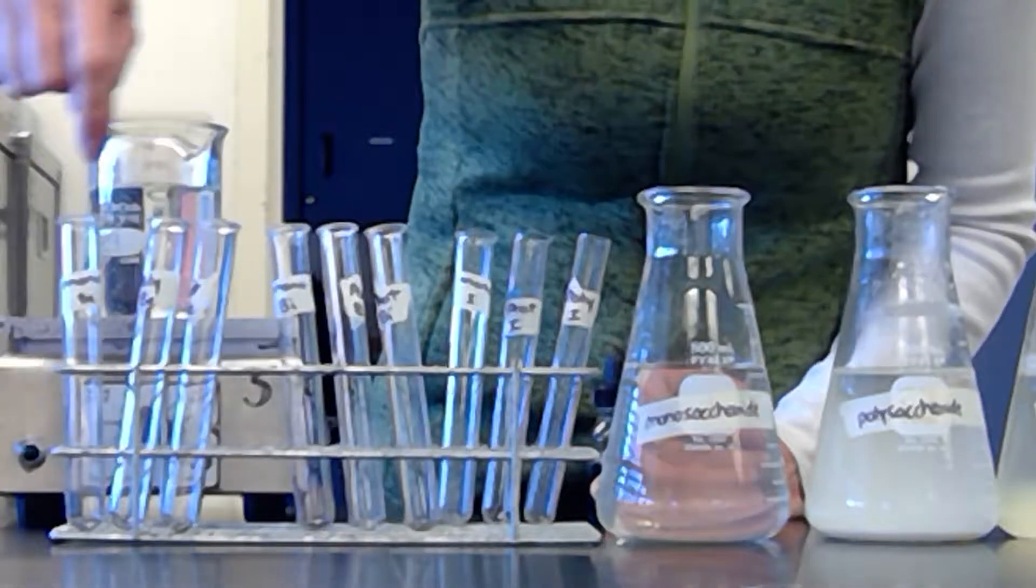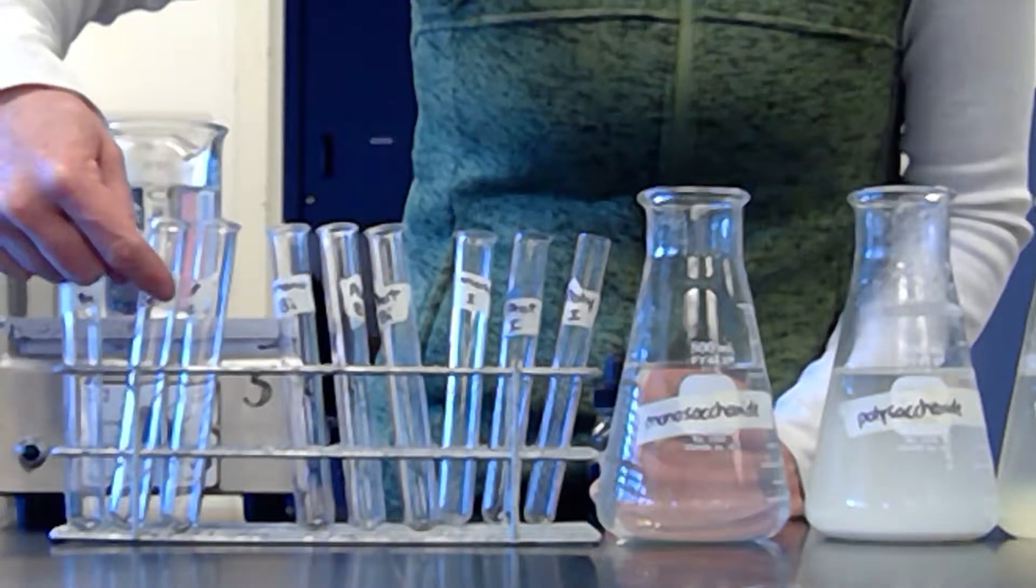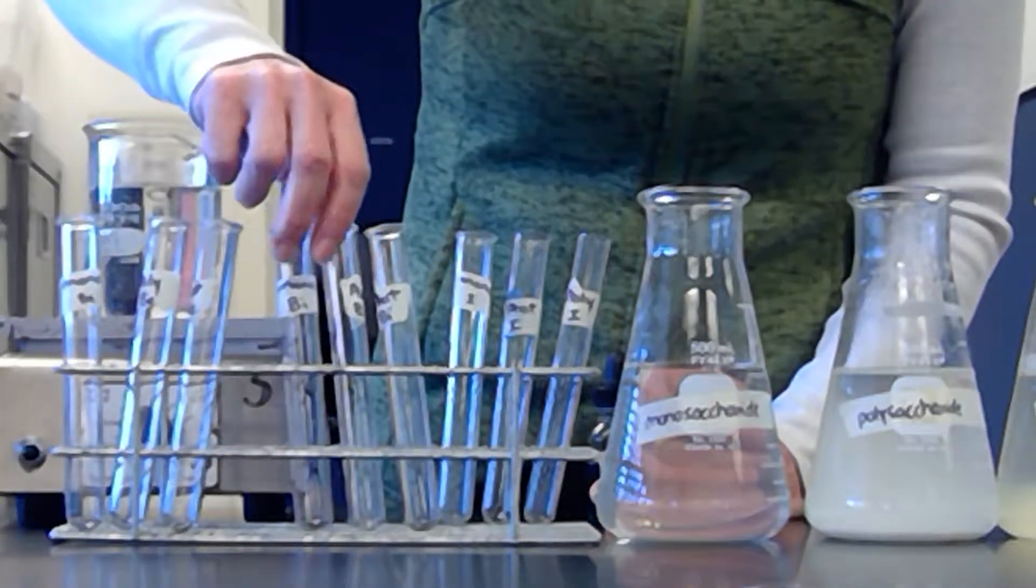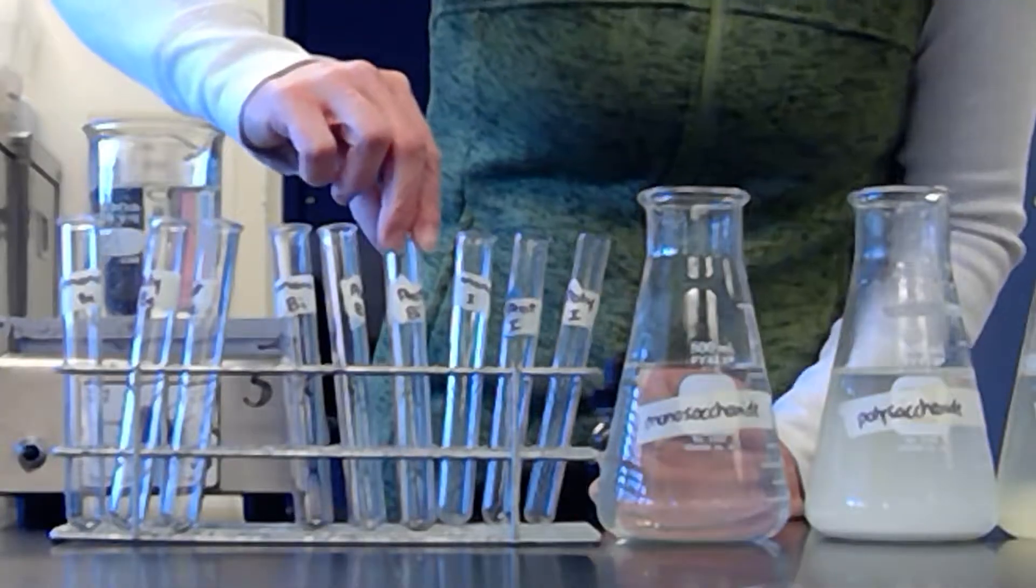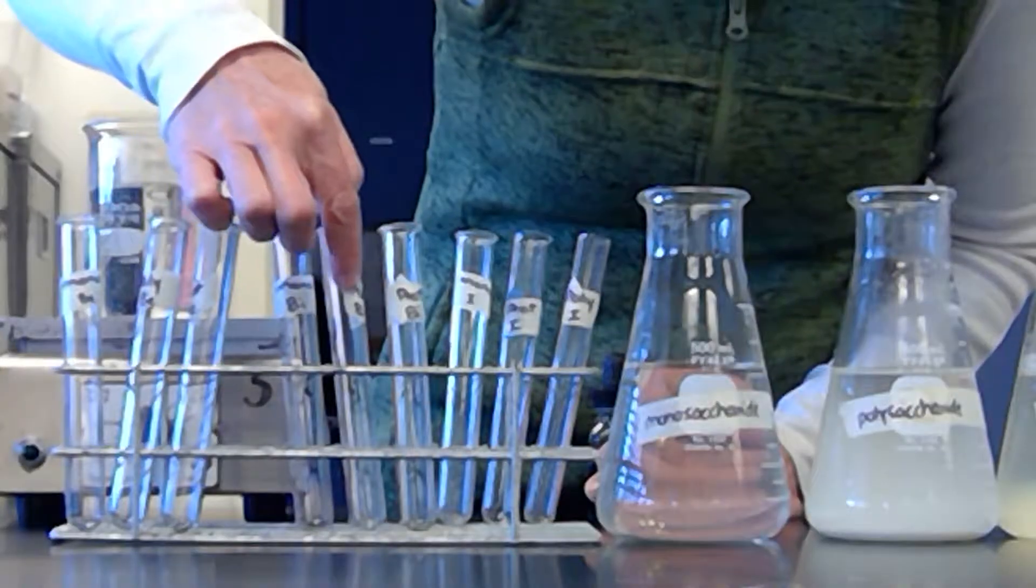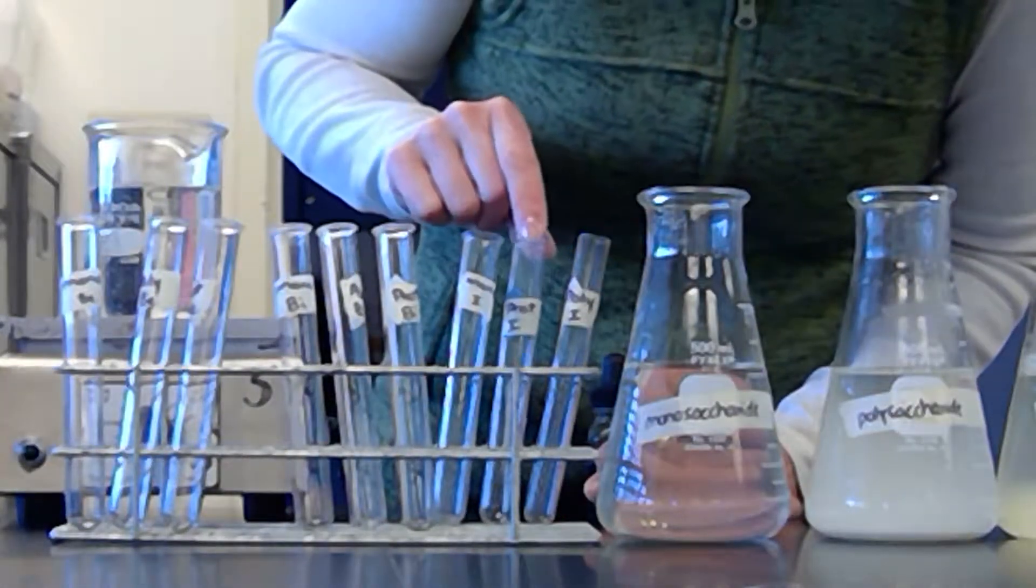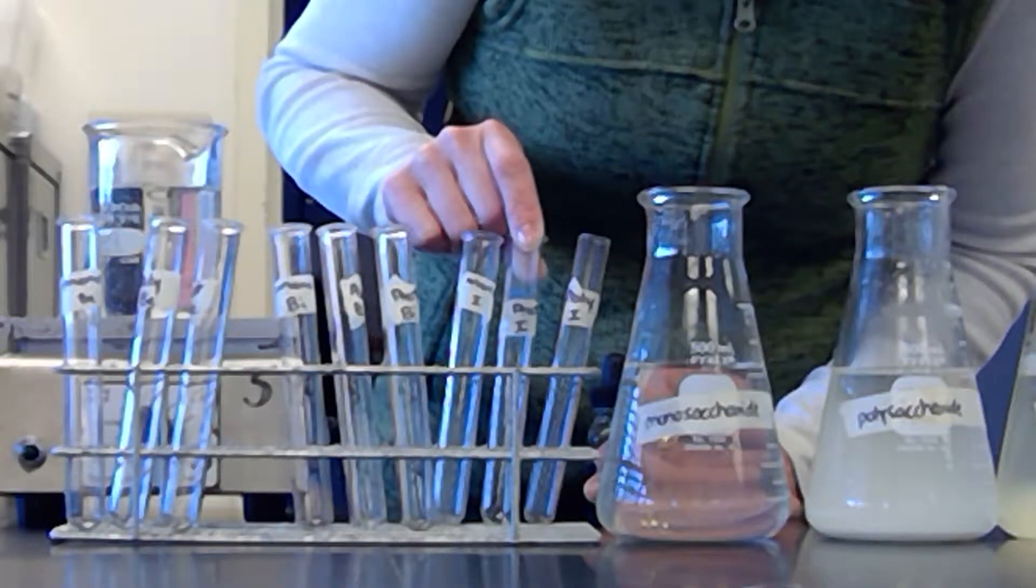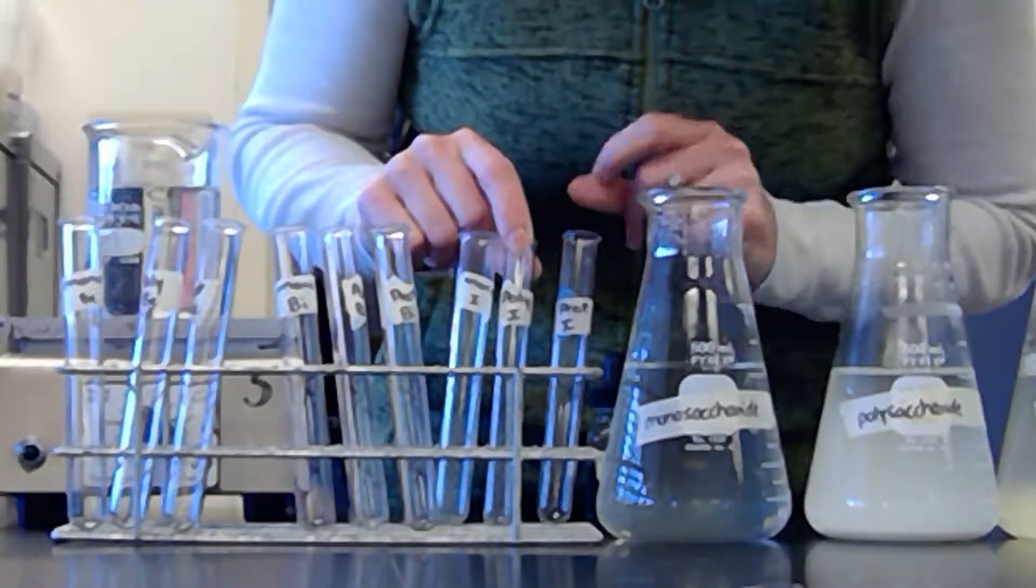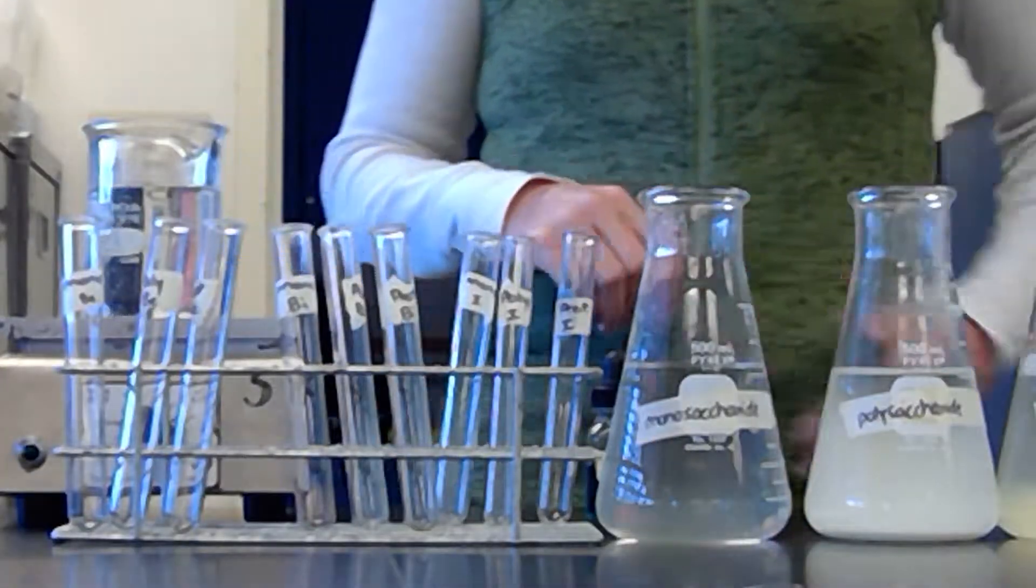So I have three different sets. This is mono, poly, protein, and then it says B, B, B for Benedict's. And then I have mono, poly, protein for biuret, and then I have mono, poly, and then proteins for iodine.